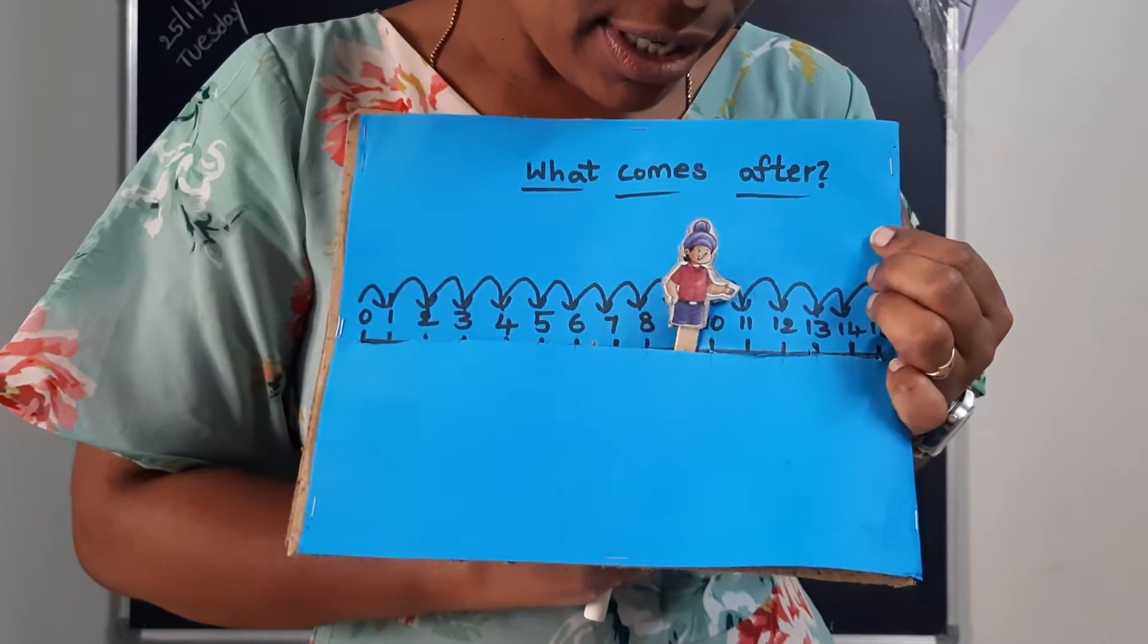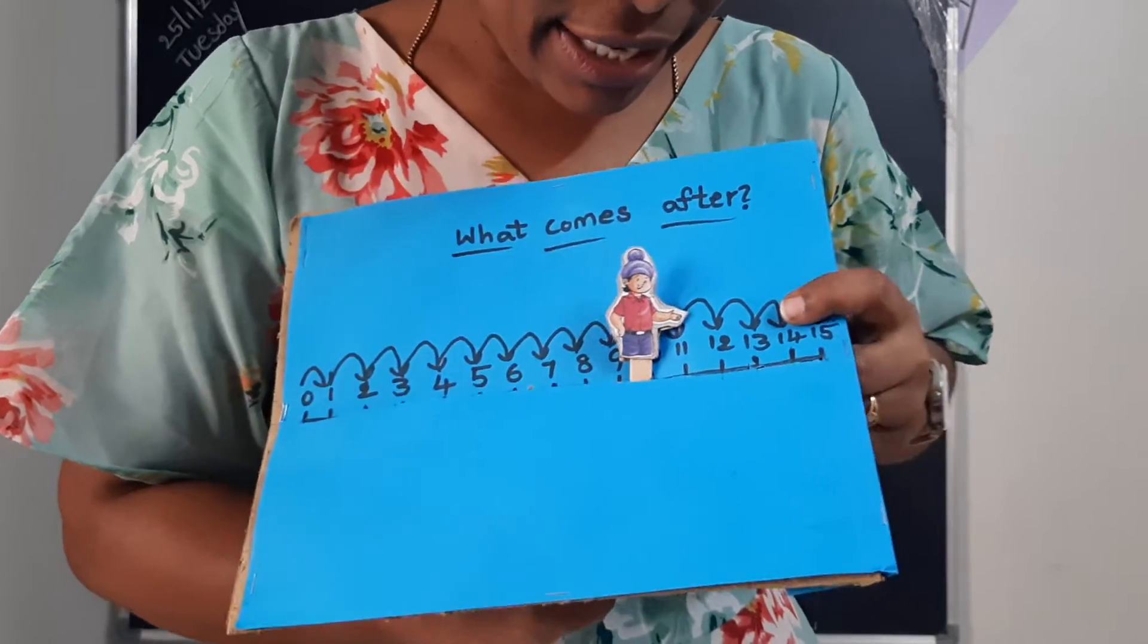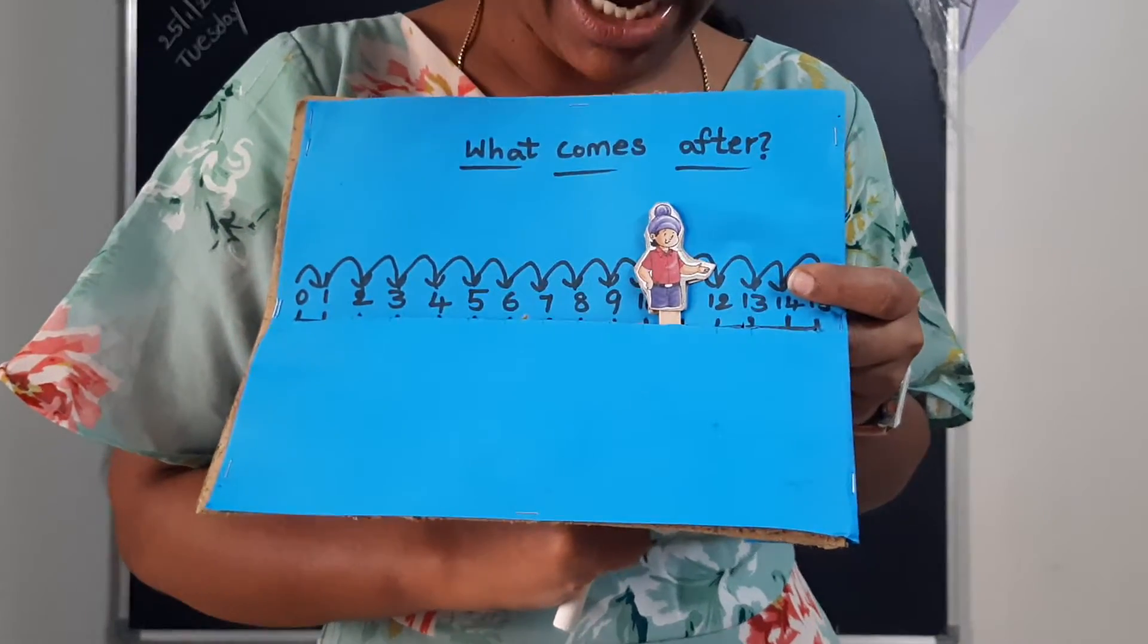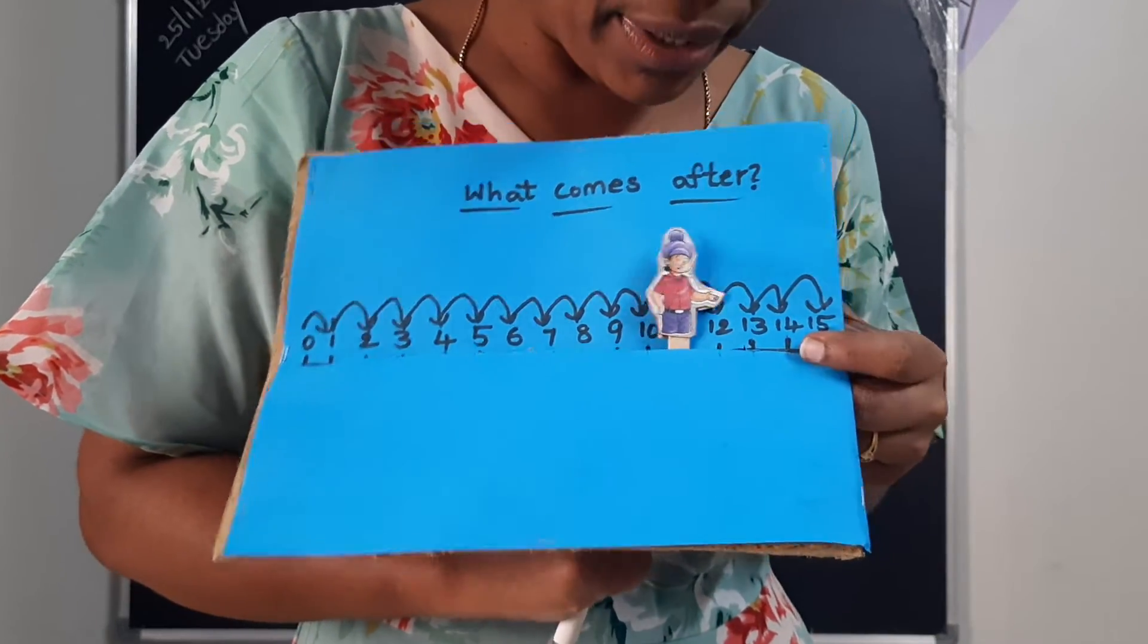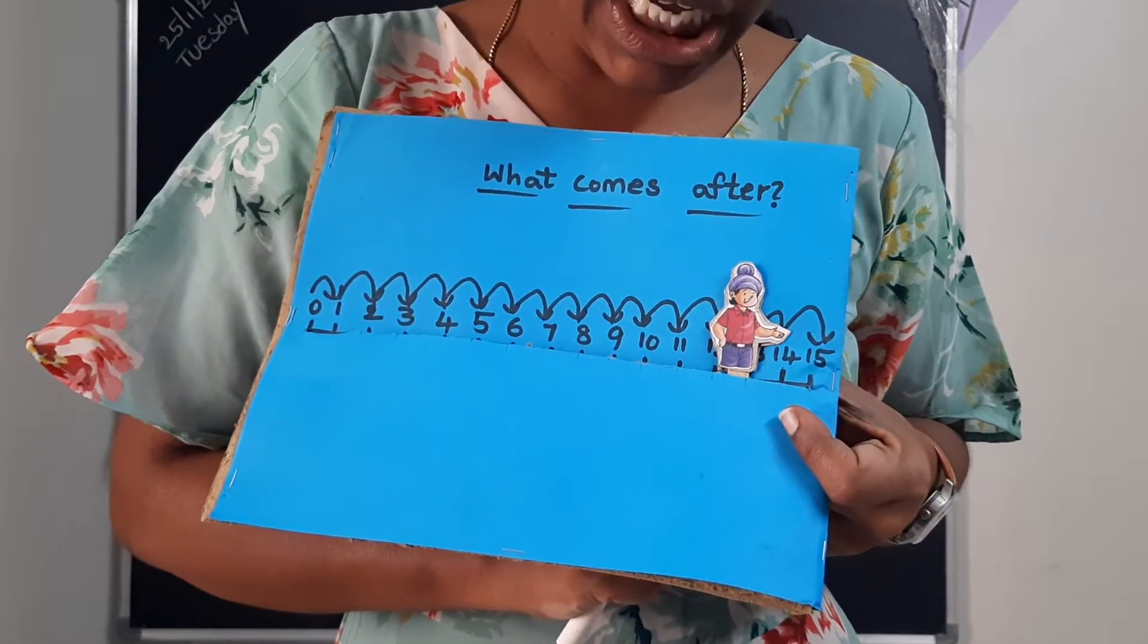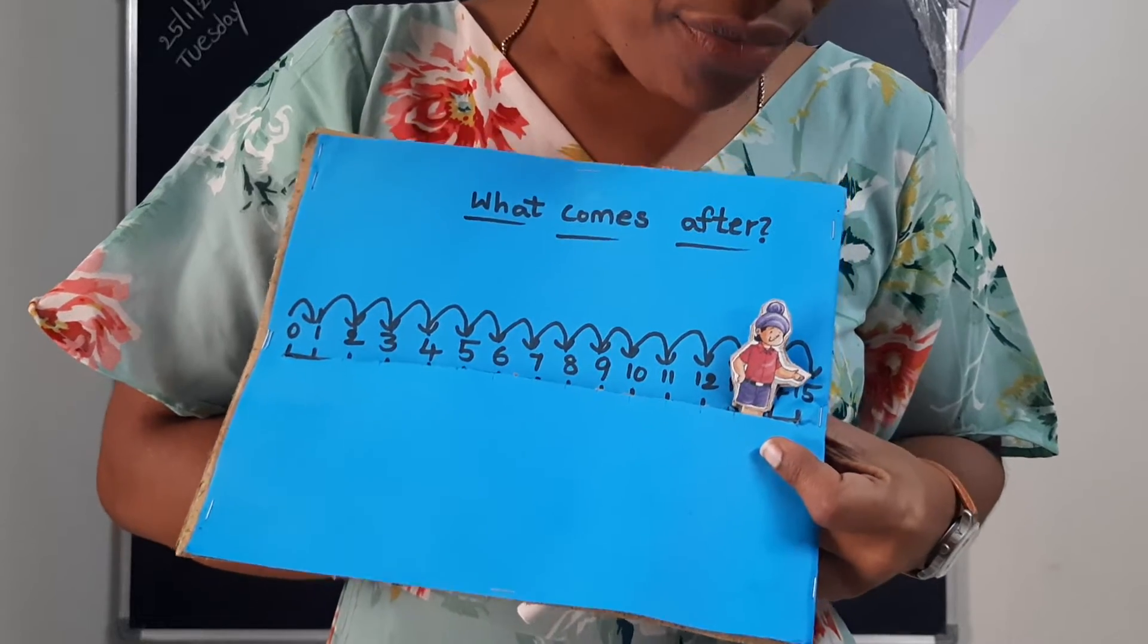9 after 10, 10 after 11, 11 after... He was standing in 11th number. Look at his left hand. He was showing 12th number. 12 after 13, 13 after 14, 14 after 15.